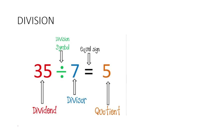Here you can see I have written one division problem: 35 divided by 7 equals 5. So 35 is your dividend, 7 is your divisor, and 5 is your quotient. In this case the remainder is 0. You all know the formula for checking division: dividend equals divisor into quotient plus remainder.